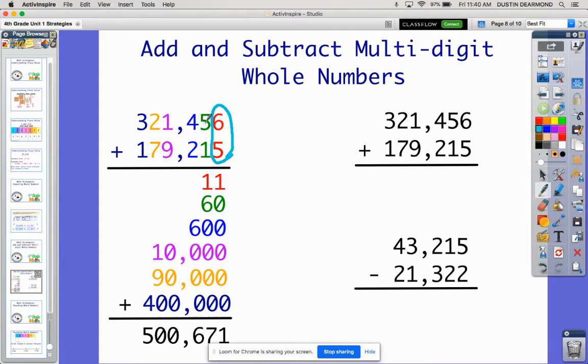And then I would say in my tens place, I have 5 and 1, which is 6. Or I could think about the value, 5 in the tens place is 50, 1 in the tens place is 10. So 50 and 10 gives me 60. And then my hundreds place, 400 and 200 is together 600.